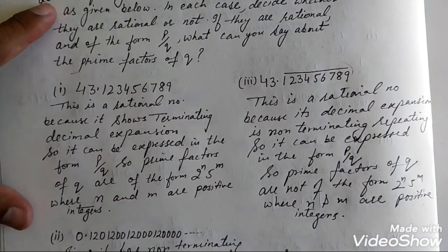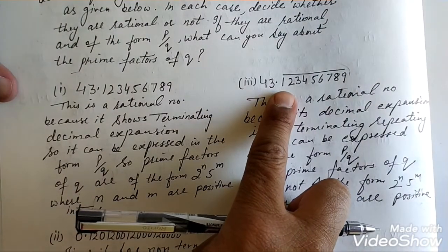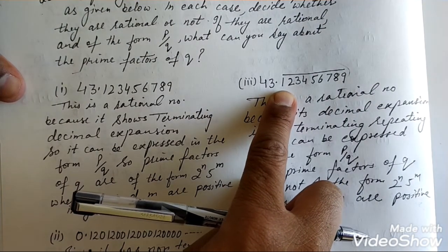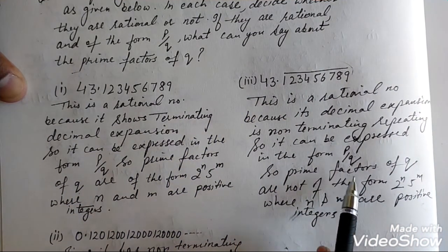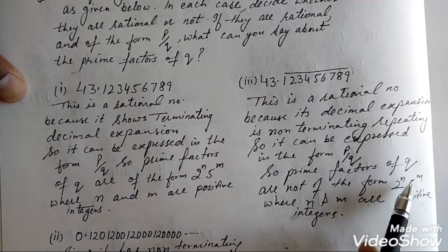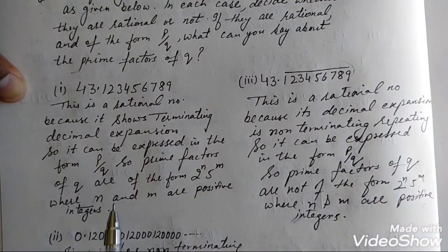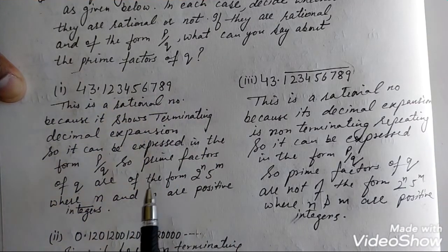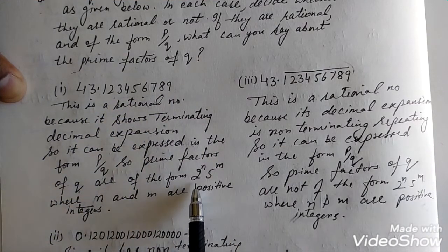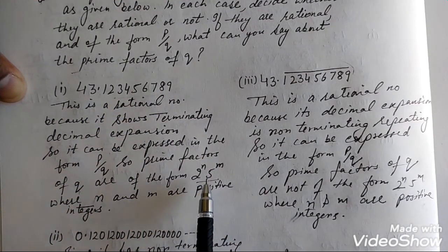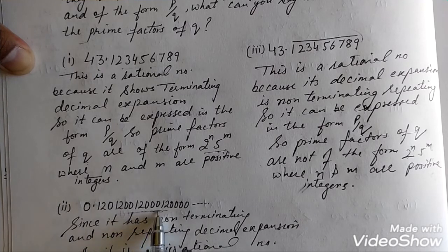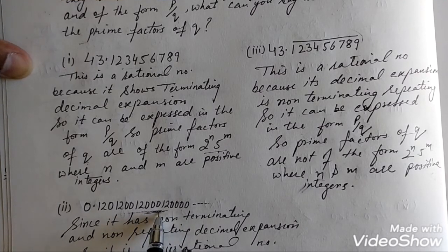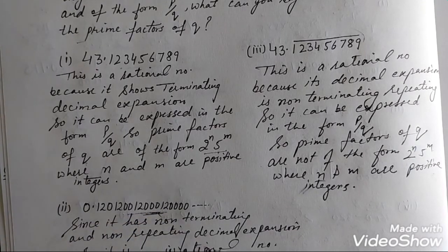To summarize: when the decimal expansion is non-terminating repeating, the prime factorization of the denominator is not of the form 2^n × 5^m. When it is terminating, the prime factorization of q is of the form 2^n × 5^m. When it is non-terminating non-repeating, it is not rational — it is irrational. Thanks for watching.